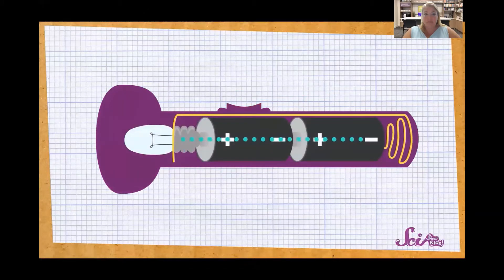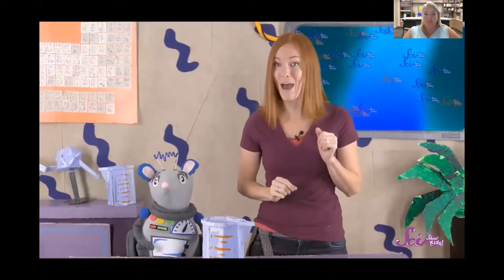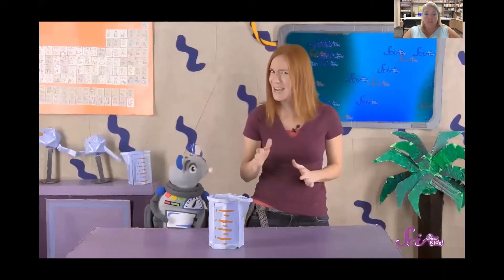Electricity flows from the battery to the light bulb. And when the electricity goes through the bulb, the flashlight lights up. But the electricity doesn't just jump from the battery right to the bulb. In order to get from the battery to the light bulb, the electricity has to go along a specific path, and that path is called a circuit. If you listen to the word circuit, it kind of sounds like a shape you might know. Let's name some shapes and see which one sounds like circuit.